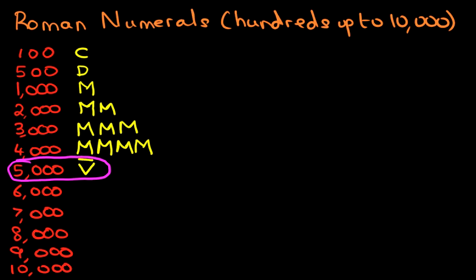The rest again follows the same principles as before. Six thousand is a V with a dash on top and an M. Seven thousand is a V with a dash on top and two M's. Eight thousand is a V with a dash on top and three M's — so that is eight thousand.